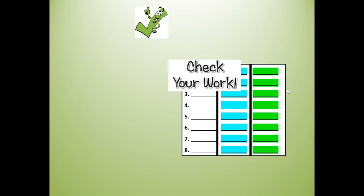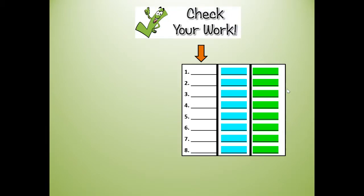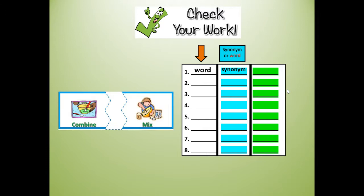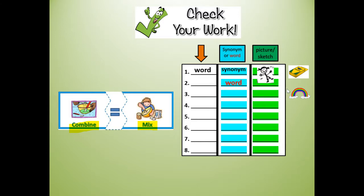Now we're going to check your work. Make sure you've written all your words one through eight and written a synonym for each. Remember, a synonym means the same — like 'combine' is the same as 'mix.' If you didn't catch the synonym, that's okay — you can rainbow write your word. Then at the very end draw a quick picture or sketch in the third column. Let's review.